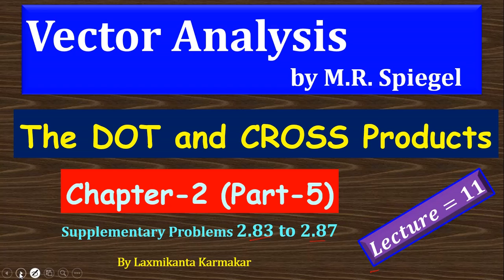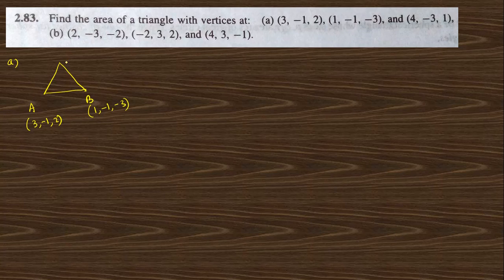Let's start today's session. The first question, 2.83, says: find the area of a triangle with given vertices. The vertices are: point A with coordinates (3, −1, 2), point B with coordinates (1, −1, −3), and point C with coordinates (4, −3, 1).